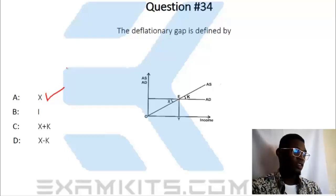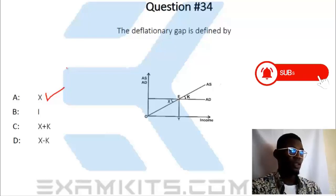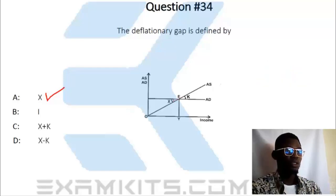The deflationary gap is the gap between aggregate demand and aggregate supply. The gap between aggregate demand and aggregate supply is shown at this point — Point X — which is the correct answer from option E.